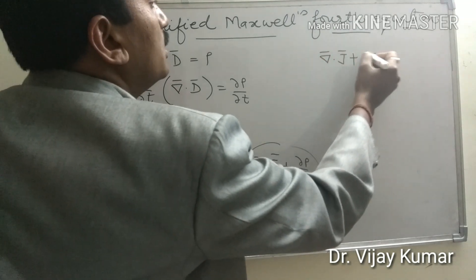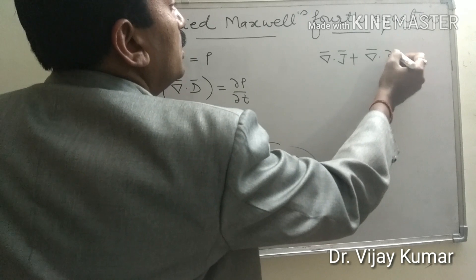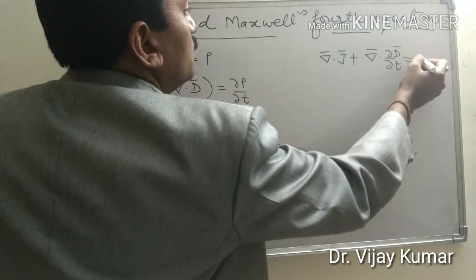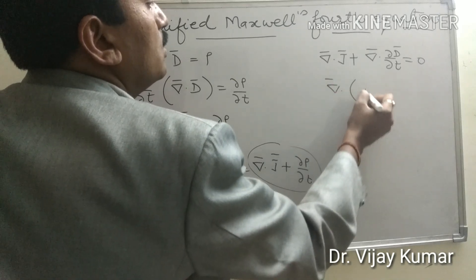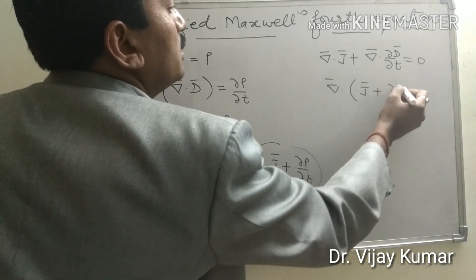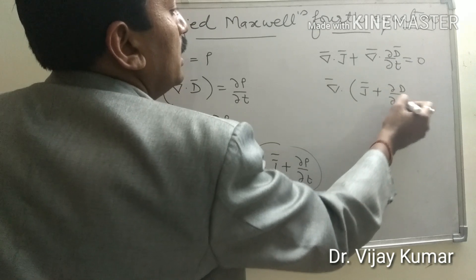And this equation becomes del dot J plus del dot del D upon del t equal to zero. And we can write it del dot J plus del D upon del t.